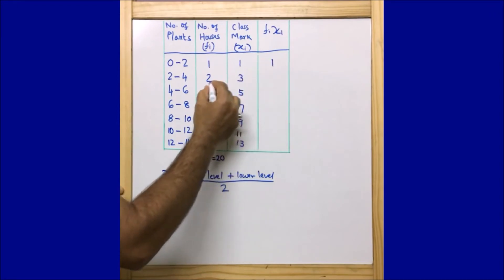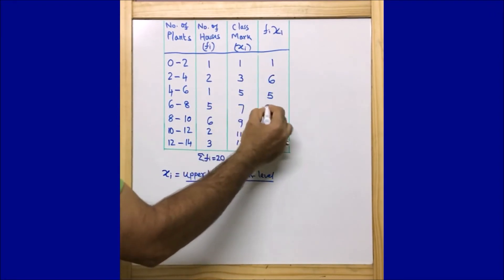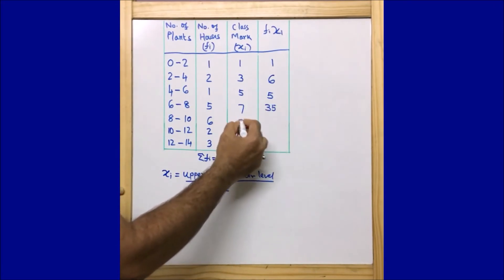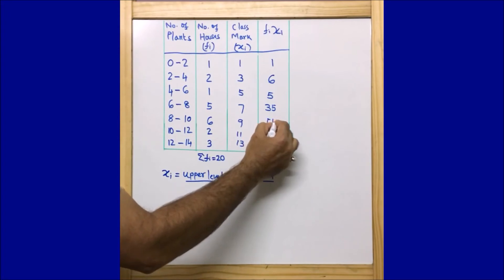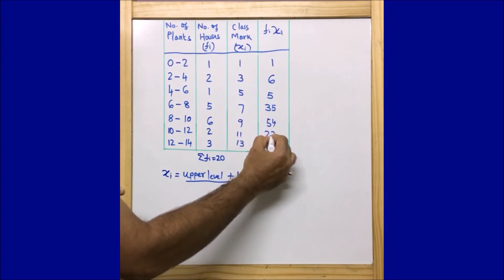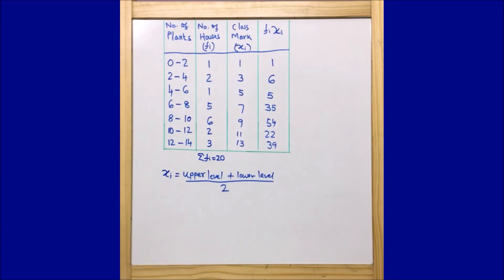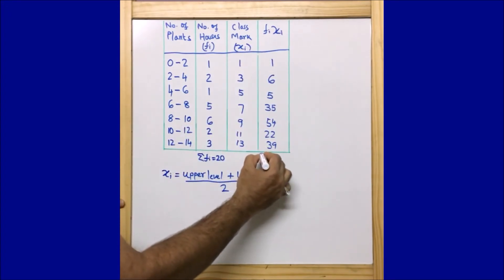Continuing the fᵢxᵢ products: 2 × 3 = 6; 1 × 5 = 5; 5 × 7 = 35; 6 × 9 = 54; 2 × 11 = 22; 3 × 13 = 39. We can see how quickly we are able to find the multiplications of fᵢ and xᵢ.